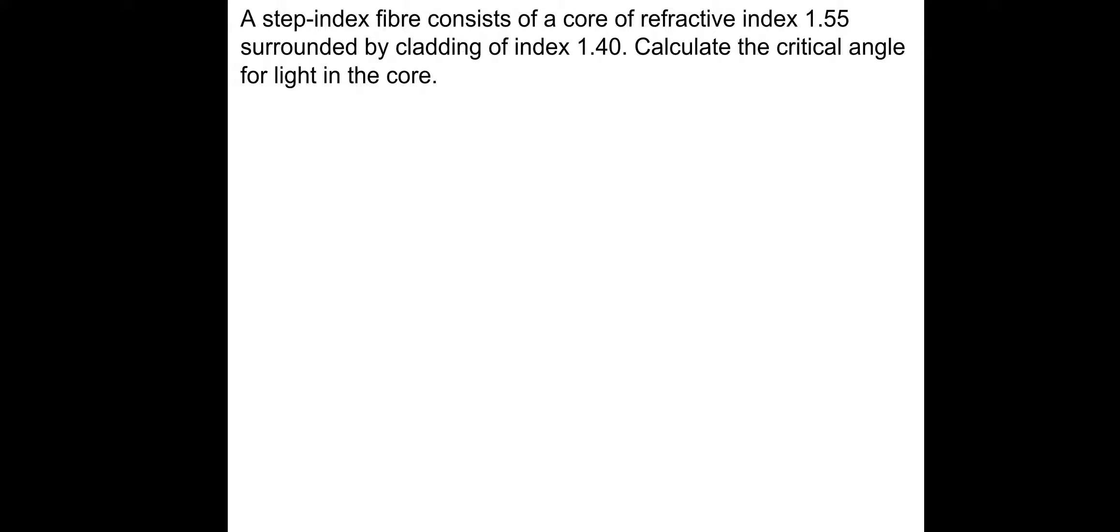So, question first. If you want to pause and have a go. A step index fiber consists of a core of refractive index 1.55, surrounded by cladding of index 1.4. Calculate the critical angle for light in the core. So that's pretty straightforward. It's just sine theta C is equal to N2 over N1. And remember, N1 must be greater than N2. So in this instance, that's okay, because the core has the 1.55 refractive index and the cladding has the 1.4 index. So this will work. So let's find theta C. So theta critical is inverse sine of N2, so that's the cladding, the 1.4, divided by the core, the 1.55. And that gives us a critical angle that is equal to 65 degrees.